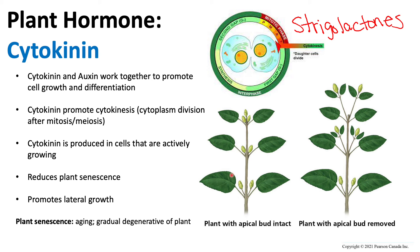So cytokinin works in the opposite direction, promoting lateral growth. With an apical bud present, the buds cannot grow laterally because the apical bud exerts dominance. But when we remove the apical bud, the sugar — which was primarily going to the apical bud — can now go to the rest of the buds, allowing them to grow laterally. We see this same effect when cytokinin works in reverse to the strigolactones.